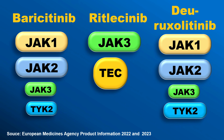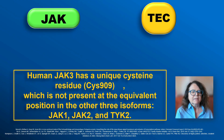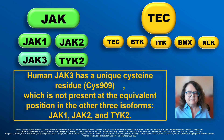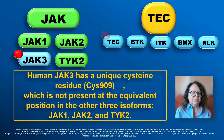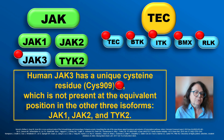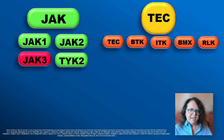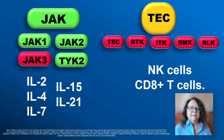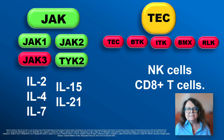How is it possible that ritlecitinib, being a selective kinase inhibitor, can inhibit two types of kinases? It is possible because the JAK kinases and the TEC kinases share one common molecule — the CYS909 molecule — which is present on JAK3 as well as on the TEC kinase isoforms. So ritlecitinib will inhibit these kinases even though it targets only one molecule. From the mechanism of action point of view, the JAK kinases are mainly responsible for the effects of cytokines, while the TEC kinases are mainly responsible for the effect of NK cells and CD8+ T cells and their involvement in the pathogenesis of alopecia areata.